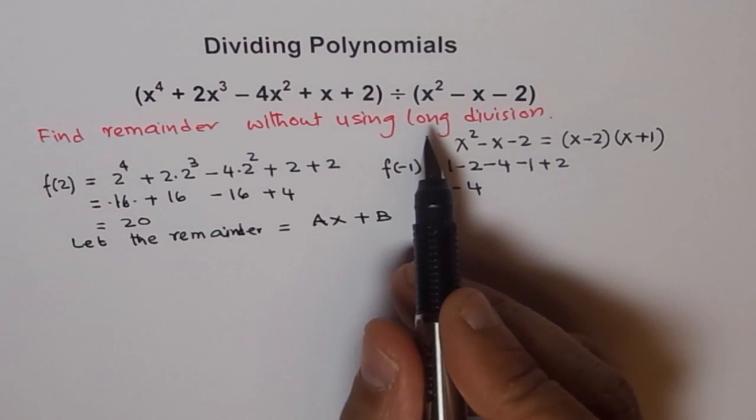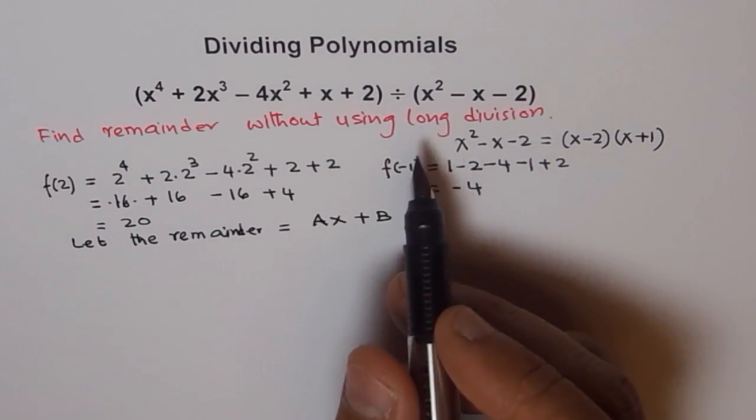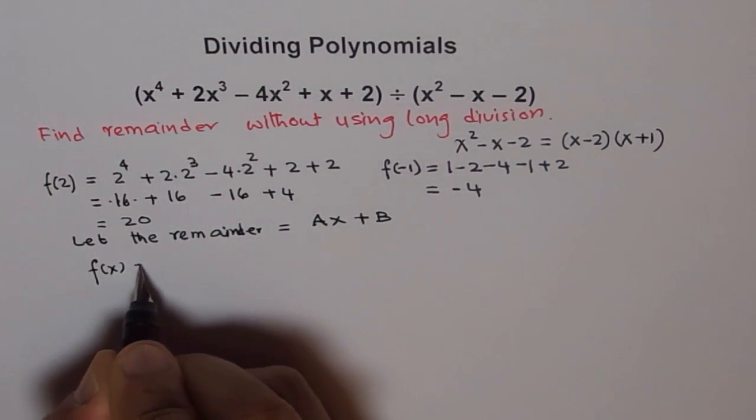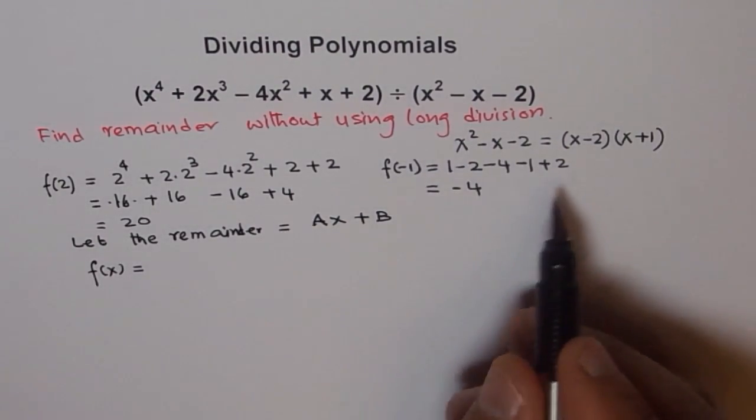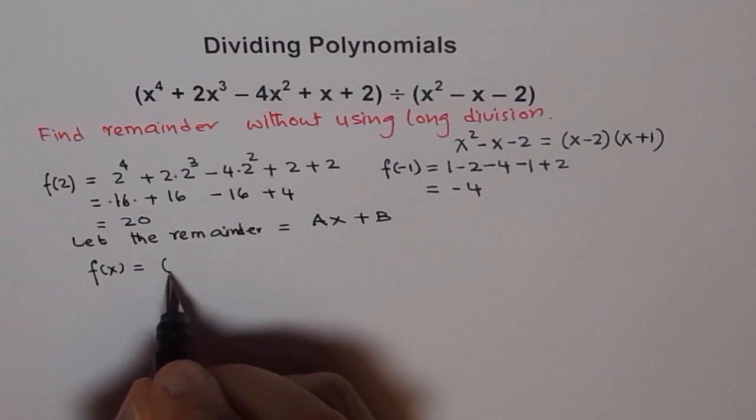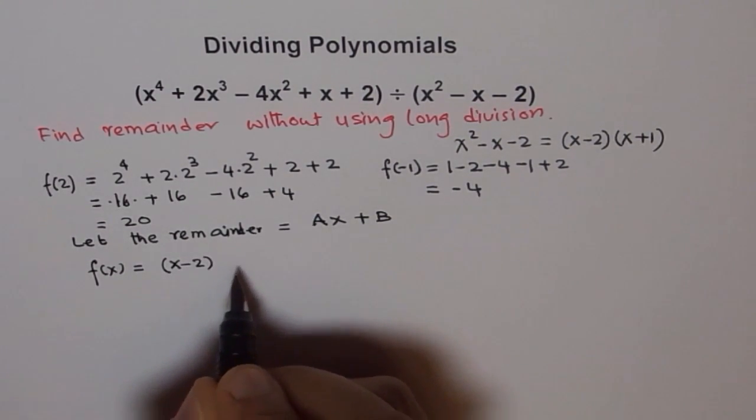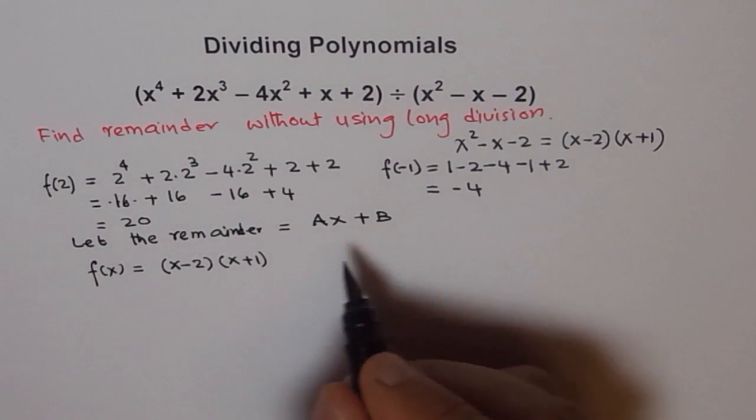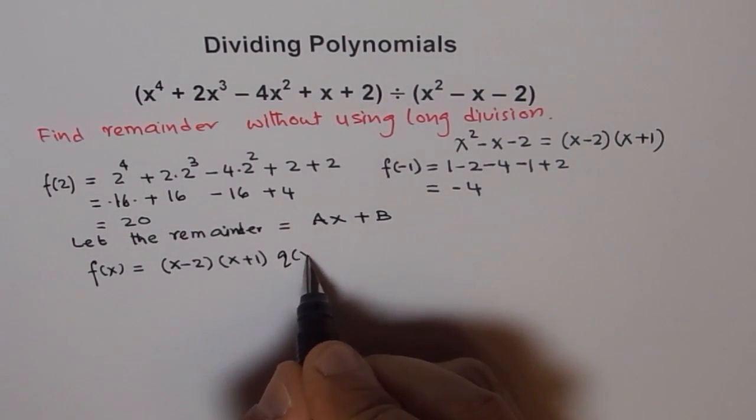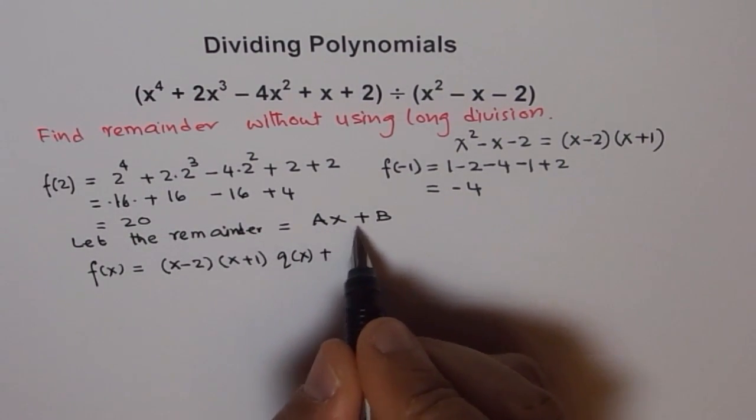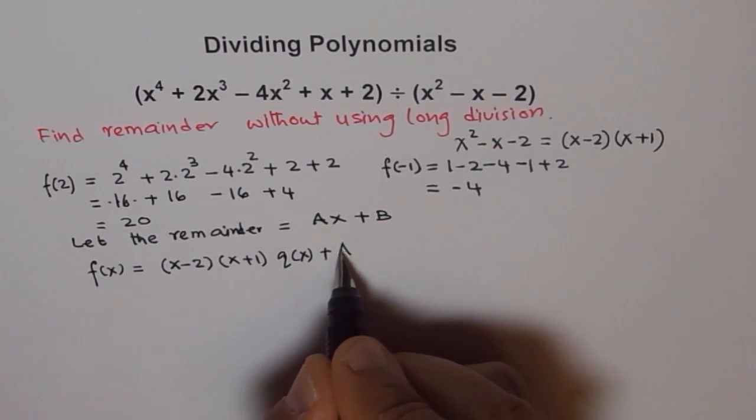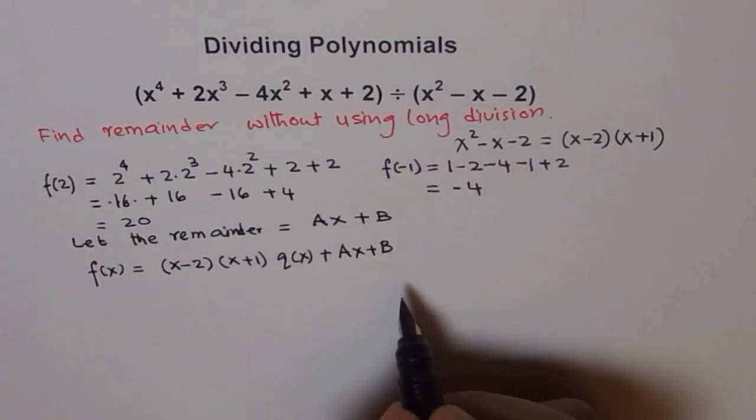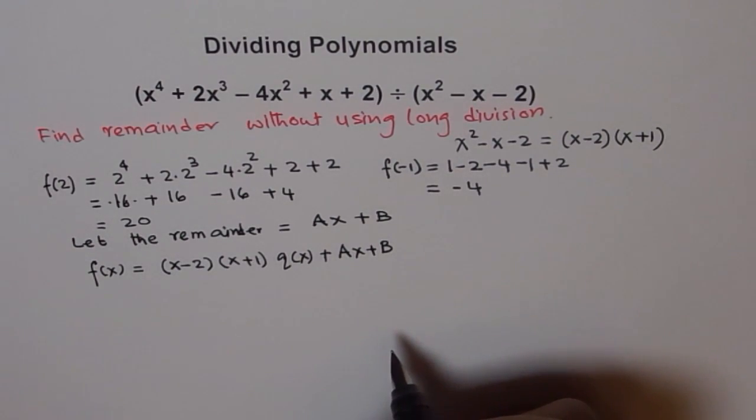Yes, of course. So let's say this is f(x). So we get f(x) is equal to this, which I'll write in factored form, divisor, (x - 2)(x + 1) times the quotient. We don't know what quotient is, so let me write it as q(x). Plus the remainder. We know the remainder should be Ax + B. The whole idea is to find Ax + B without doing long division.